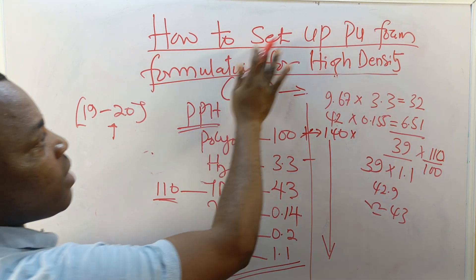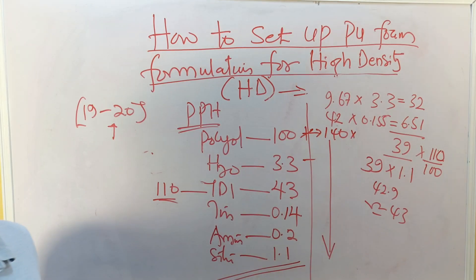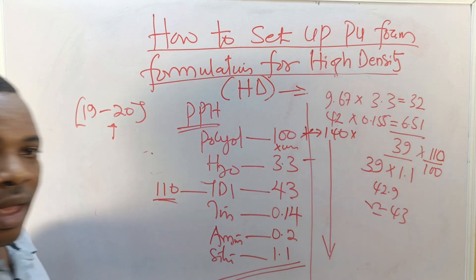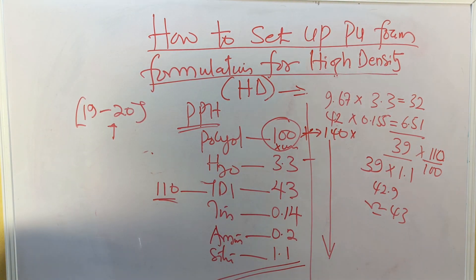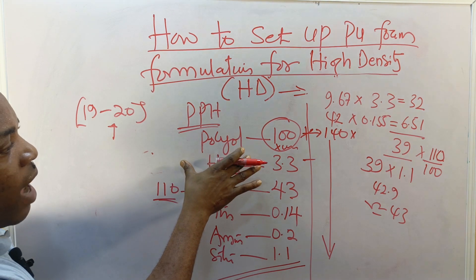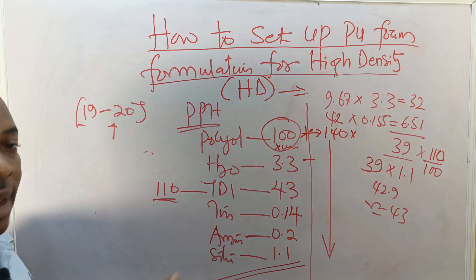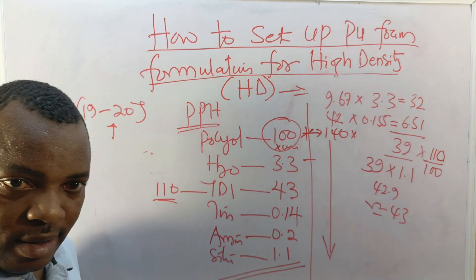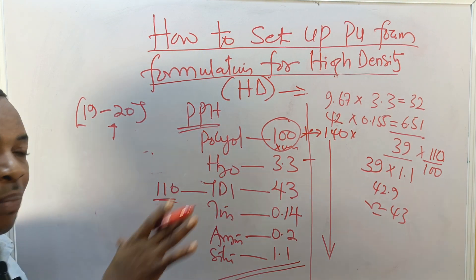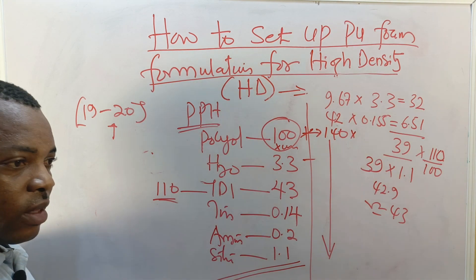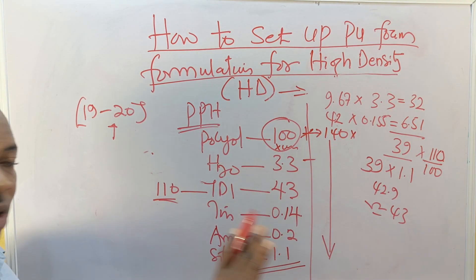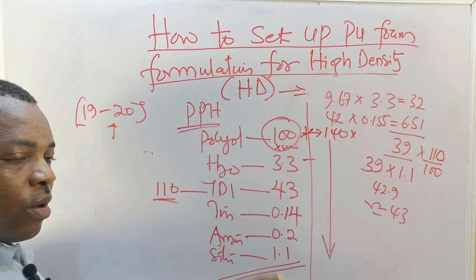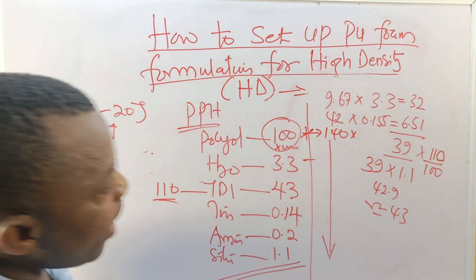This is a simple way how to set up PU foam formulation for higher density. In this one I'm going to try something different in that we do not incorporate calcium carbonate. We are using virgin polyol to show example on how to carry out or set up PU foam formulation of 30 kg density. What I am doing here, do not copy and paste. I'm only presenting a guiding principle, how to follow it in a professional perspective.